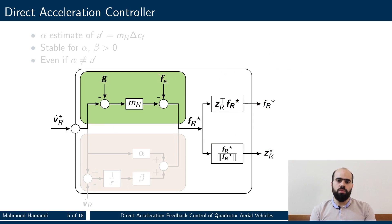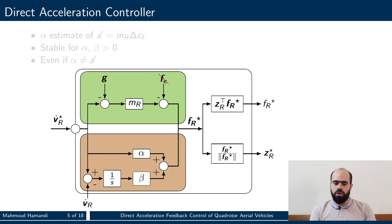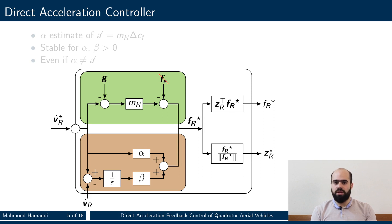To zoom in a bit more on the acceleration controller, we can see from this graph that the model inversion requires the knowledge of the platform mass, gravity direction, and external forces, which are usually unknown but rather estimated. Instead, our controller shown here calculates the desired force as the feedforward of the desired acceleration, in addition to an integral of the error between the measured and desired acceleration.